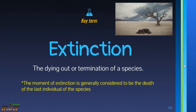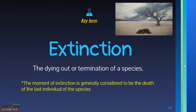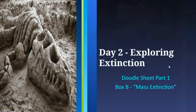What is extinction? Extinction is a key term — it means the dying out or termination of a species. The moment of extinction is generally considered to be the death of the last individual of the species. Sometimes the date of extinction can be revised; there have been instances where, for example, the last known Tasmanian tiger died but individuals were later found in the wild — very rare, but it happens. Usually, once a species is labeled extinct, there are no more in the world.